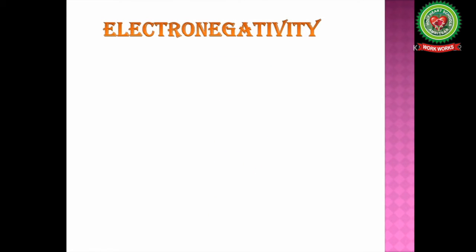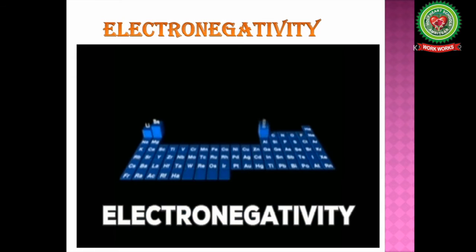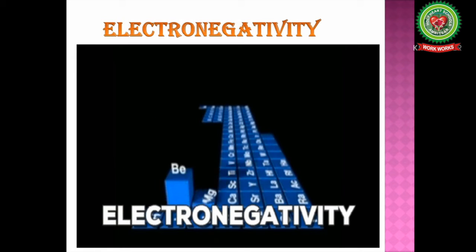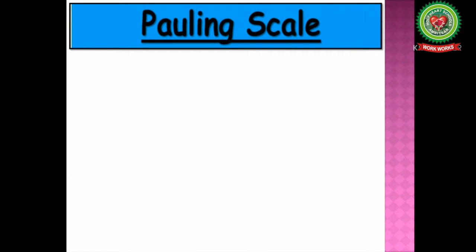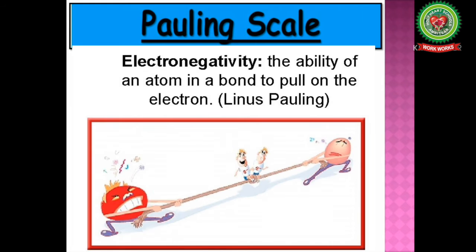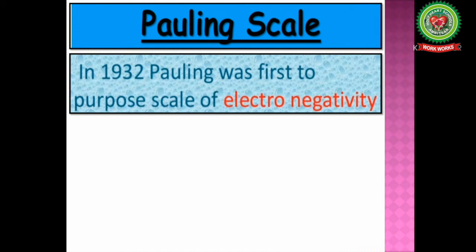The first question that arises is: what do you mean by electronegativity? Electronegativity is the tendency of an atom in a molecule to attract the shared pair of electrons towards itself. Electronegativity is a dimensionless property since it is only a tendency. There are many scales on which electronegativity can be measured, but the most widely used scale is the Pauling scale, which was discovered by Linus Pauling in 1932.